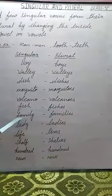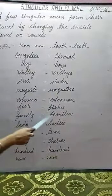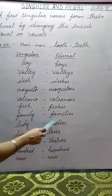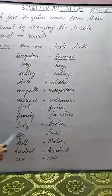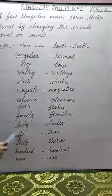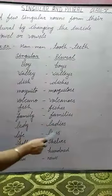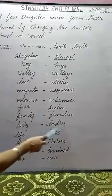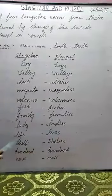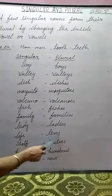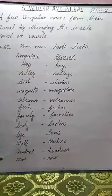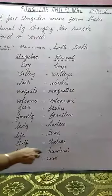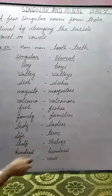Family — the plural of 'family' is 'families.' Lady — its plural is 'ladies.' Life — its plural is 'lives.' Shelf — its plural is 'shelves.'